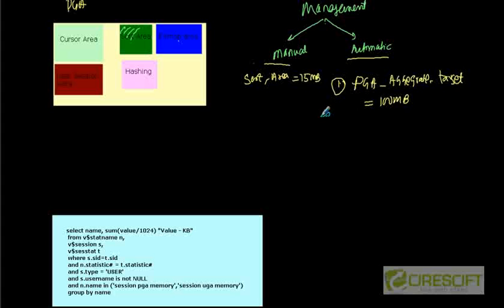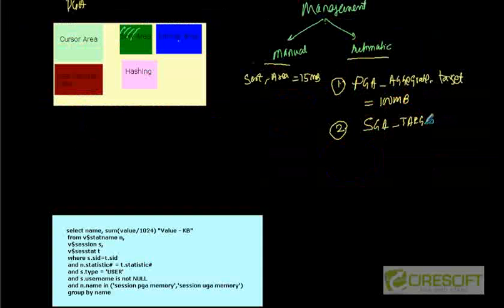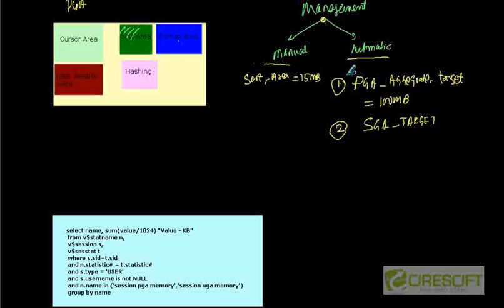There is also a higher-level parameter called 'sga_target'. Since memory consists of both PGA and SGA, setting sga_target means you define the total memory and Oracle automatically calculates how much goes to PGA and how much to SGA. You can manage memory either manually by setting all individual parameters, or automatically by setting a single parameter.